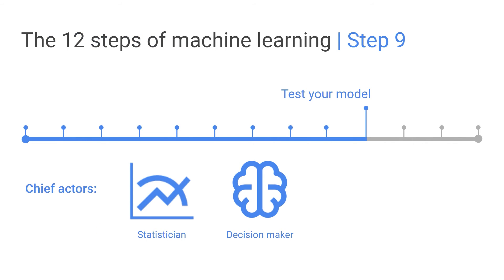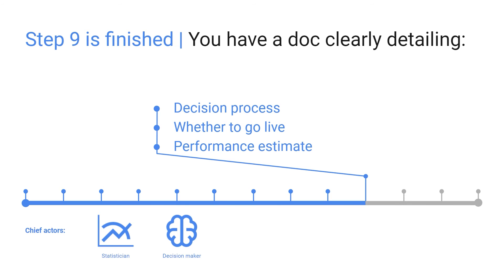Step 9: testing. Should we actually allow this thing to move to the next stage and get productionized? Step 9 is finished when you have a document clearly detailing your decision process, whether to take your model live, and your estimated performance in your new data.